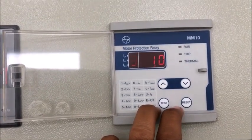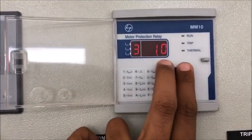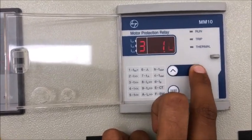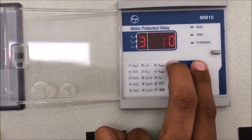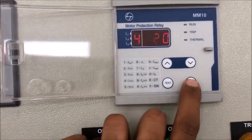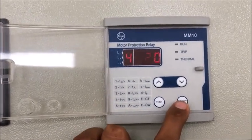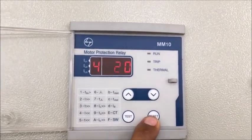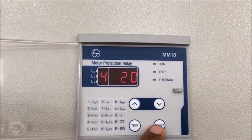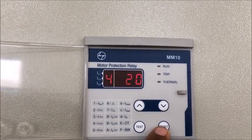You can change by simultaneously pressing up and down arrow, then using up arrow you can increase and using down arrow you can decrease. If you want to save then again simultaneously press those buttons.